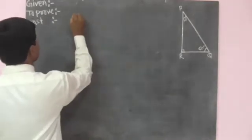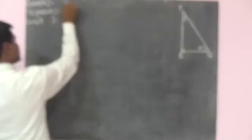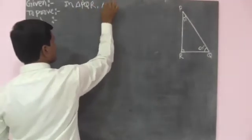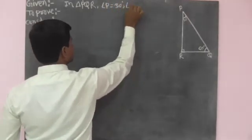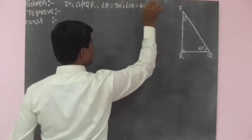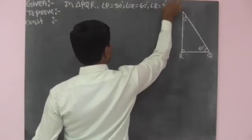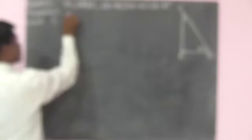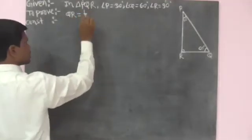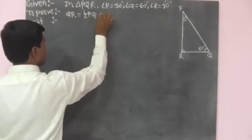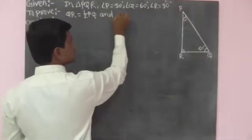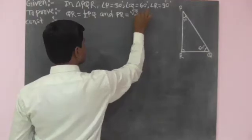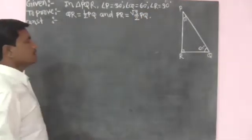We write the given and to-prove of the theorem. In triangle PQR: the measure of angle P is equal to 30 degrees, measure of angle Q is equal to 60 degrees, and measure of angle R is equal to 90 degrees. To prove: side QR opposite to the 30 degree angle is equal to half of hypotenuse PQ, and side PR opposite to the 60 degree angle is equal to root 3 upon 2 times of the hypotenuse PQ.